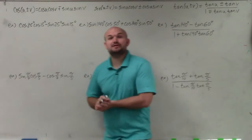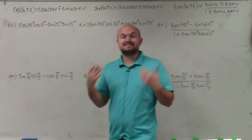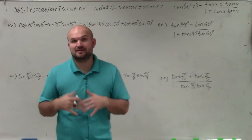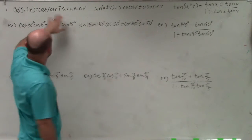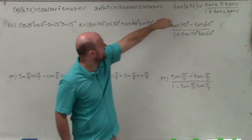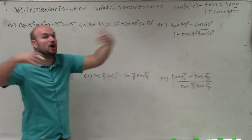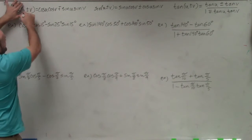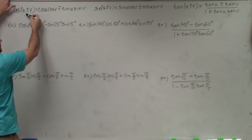Welcome ladies and gentlemen. What I'd like to do is show you how to write an equation as sine, cosine, or tangent of an angle. What I have up here are the sum and difference formulas for cosine, sine, and tangent. Rather than writing out all six formulas, I combined the addition and subtraction using the plus or minus sign.